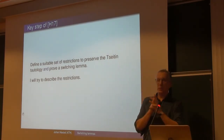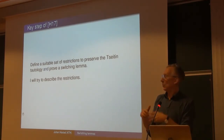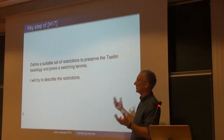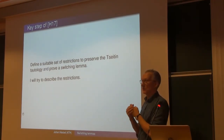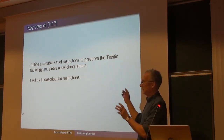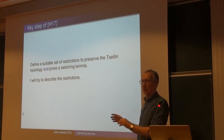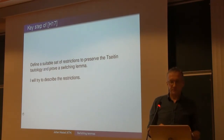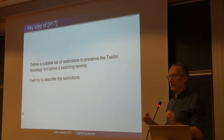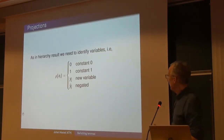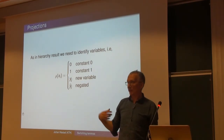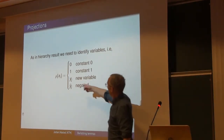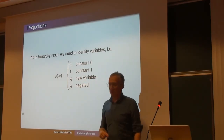The key task is finding a good way of setting variables that still allows proving a switching lemma. This is where I come in — defining restrictions and proving switching lemmas is what I like. These restrictions not only set variables to constants but also identify several variables together, with suitable negations.